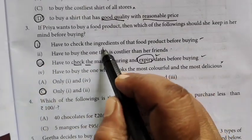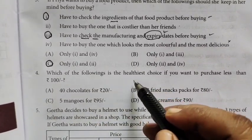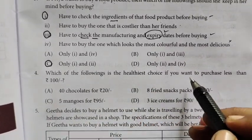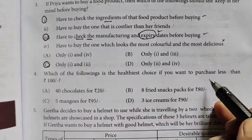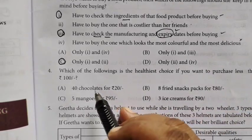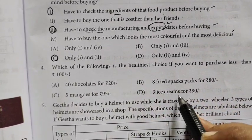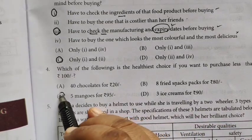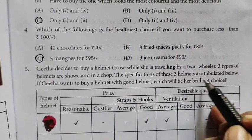Which of the following is the healthiest choice if you want to purchase less than 100 rupees? You can choose chocolate, fried snacks, ice cream is not healthy, mango is not healthy. So we are choosing C.